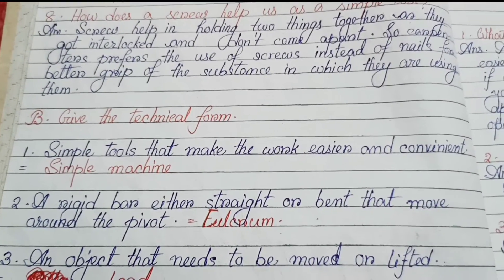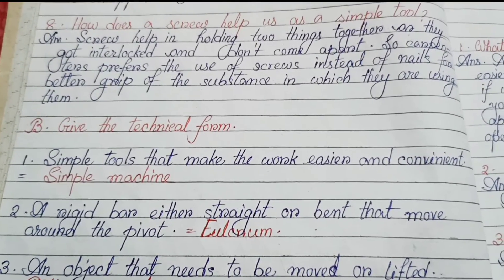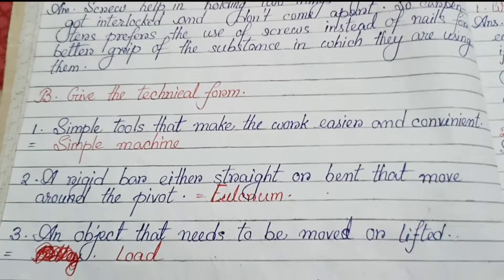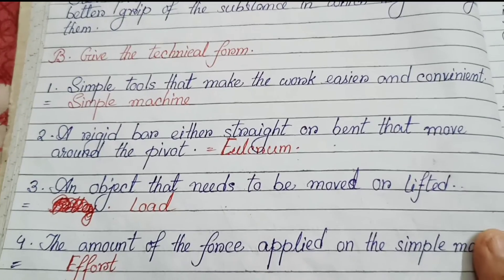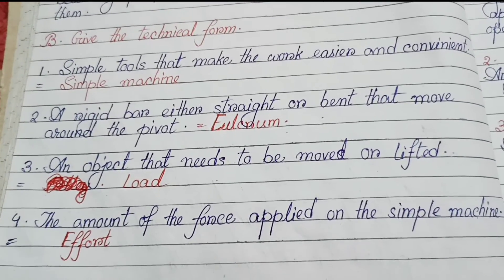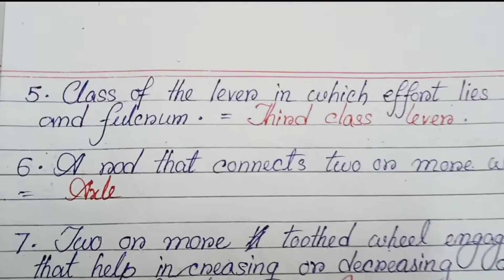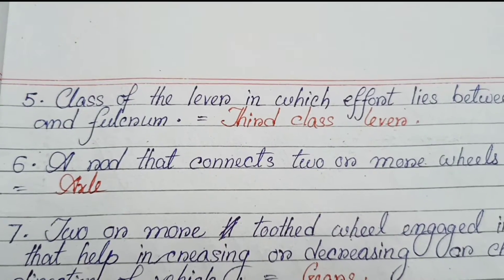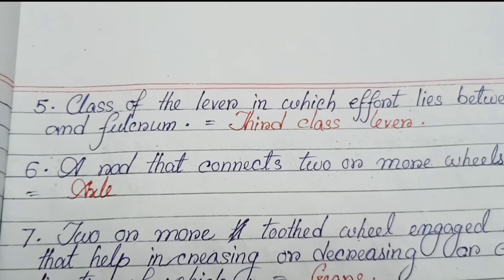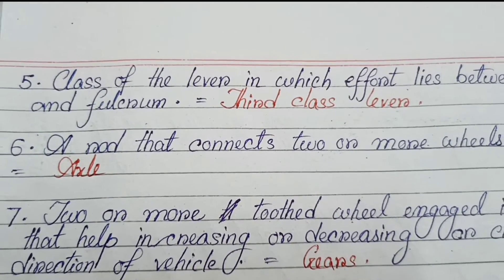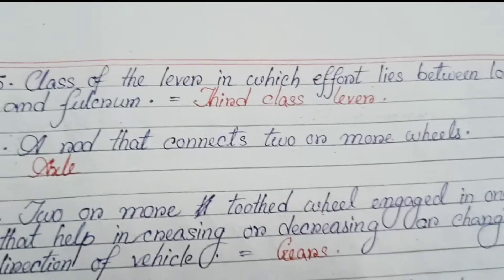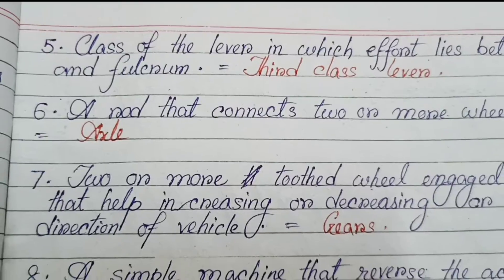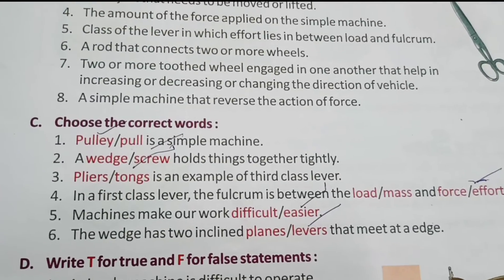Give the technical term. One: Simple tools that make the work easier and convenient — simple machine. Two: A rigid bar either straight or bent that moves around the pivot or fulcrum. Three: An object that needs to be moved or lifted — load. Four: The amount of force applied on the simple machine — effort. Five: Class of lever in which effort lies between load and fulcrum — third class lever. Six: A rod that connects two or more wheels — axle. Seven: Two or more toothed wheels engaged with one another that help in increasing, decreasing or changing the direction of a vehicle — gear.